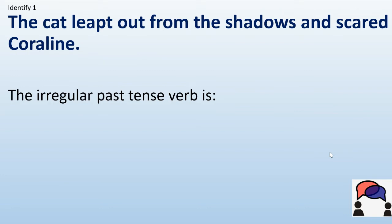Let's have a look at this example: the cat leapt out from the shadows and scared Coraline. The irregular past tense verb is leapt. It's important that you look at the spelling here — it's not going to be L-E-A-P-E-D, it's going to be L-E-A-P-T.